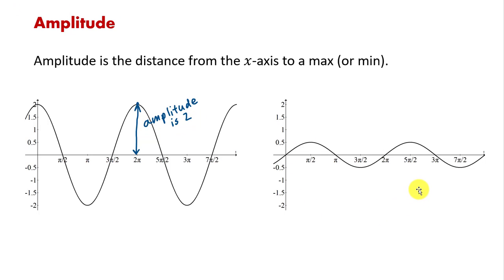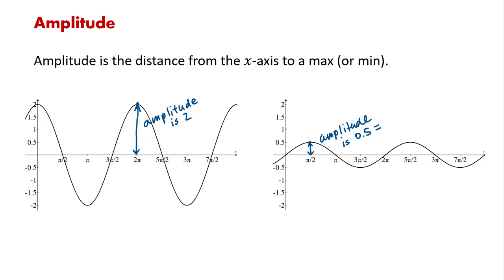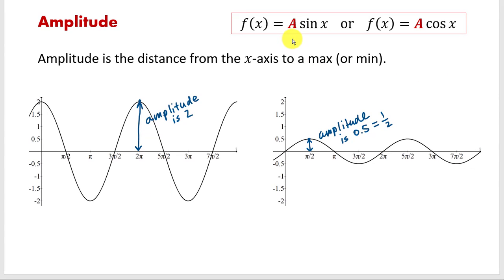How about the second graph? If I use this maximum point, then this is going to be the amplitude. Looks like it's 0.5, or I can also write it as one half. So you probably got the idea of what the amplitude is. But where is it reflected in the function itself? Well, the amplitude will be shown in the front of the sine or cosine.